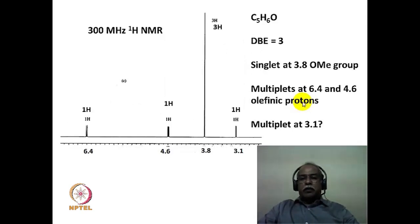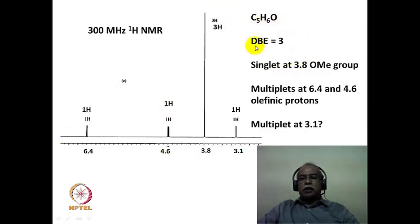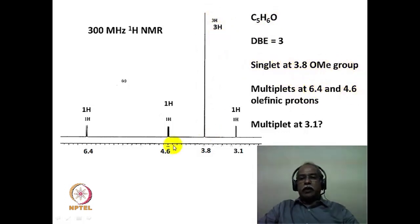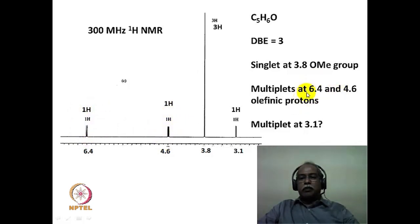Now let us solve a chemical structure problem. We will try to identify the chemical shift value and J value. The purpose of this exercise is to familiarize students with the logical way of deducing the structure of an organic compound from the molecular formula and spectral pattern. From the molecular formula, the double bond equivalence of this compound is about 3. There is a singlet at 3.8 ppm of 3 hydrogen intensity, which can be assumed to be a methoxy functional group due to the presence of oxygen.